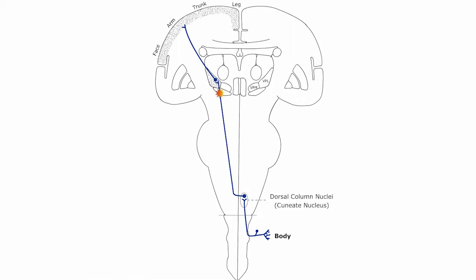The decussation then is in the caudal medulla. It also ascends to the same thalamic nucleus — ventral posterior lateral — and different neurons in that nucleus then send their axons, the third neurons, through the internal capsule to the postcentral gyrus, primary somatosensory cortex.